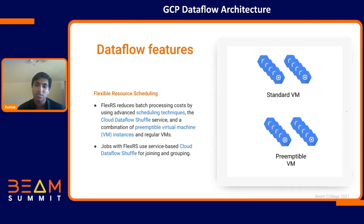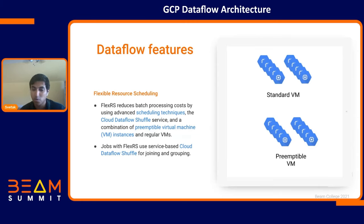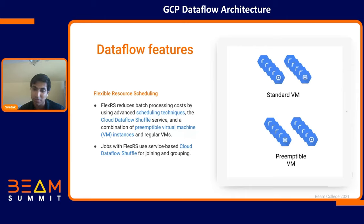Flexible resource scheduling gives us two types of VMs: standard VMs, which is what I've been referring to previously, and preemptible VMs, which are short-lived and ephemeral in nature — they last about 24 hours. With flexible resource scheduling, you might want a mix of both. If a preemptible VM dies, your job can continue, and using preemptible VMs can be really useful for cost savings.